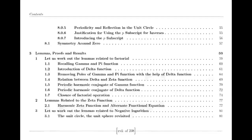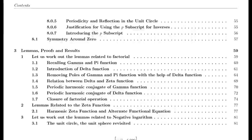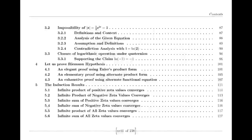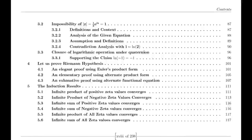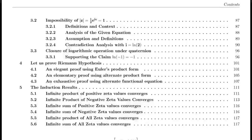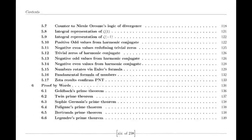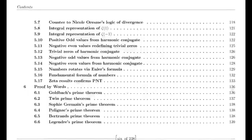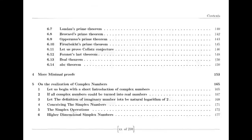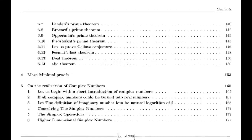Riemann was also influenced by the Dirichlet eta function, defined by an alternating series. This function is closely related to the zeta function and provides valuable insights into its behavior, particularly for values of s less than one. The relationship between the eta function and the zeta function is encapsulated in a simple formula involving the gamma function and powers of two, which helps in understanding the zeta function's properties across different regions.